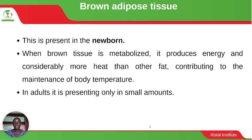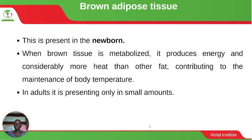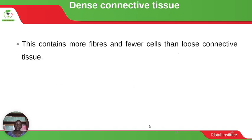The brown adipose tissue is present in the newborn. When brown tissue is metabolized it produces energy and considerably more heat than other fat, contributing to the maintenance of body temperature. In adults it is present only in small amounts. It is very important in maintaining the temperature of the baby, since when a baby is born it is exposed to low temperatures it had not previously experienced.